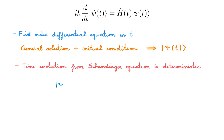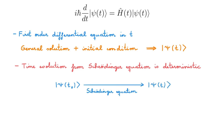Once we know the state of the system at any point in time, say t0, then the Schrödinger equation tells us exactly what the state of the system will be at a later time t. So a question you may have now is, given that the Schrödinger equation is deterministic, where does the famous probabilistic nature of quantum mechanics come from?